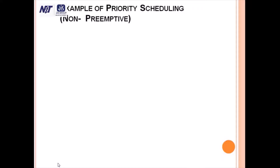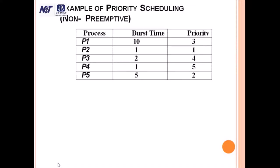Now, an example of non-preemptive priority scheduling. In this problem, five processes are there and their burst time and arrival time is not given — meaning all processes come into the ready queue at zero. Their priorities are also given: P1 has priority 3, P2 has priority 1, P3 has priority 4, P4 has priority 5, P5 has priority 2.